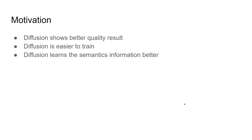The motivation of this paper is that diffusion has shown better quality results in the generic computer vision field. It has been used in famous models like DALL-E, DALL-E 2, and stable diffusion to generate modern art and paintings. Another reason is diffusion is pretty easy to train, which is why they want to use diffusion to replace GAN. Diffusion also learns semantic information better because of its latent space — it can learn anatomic information from training data better than GAN.